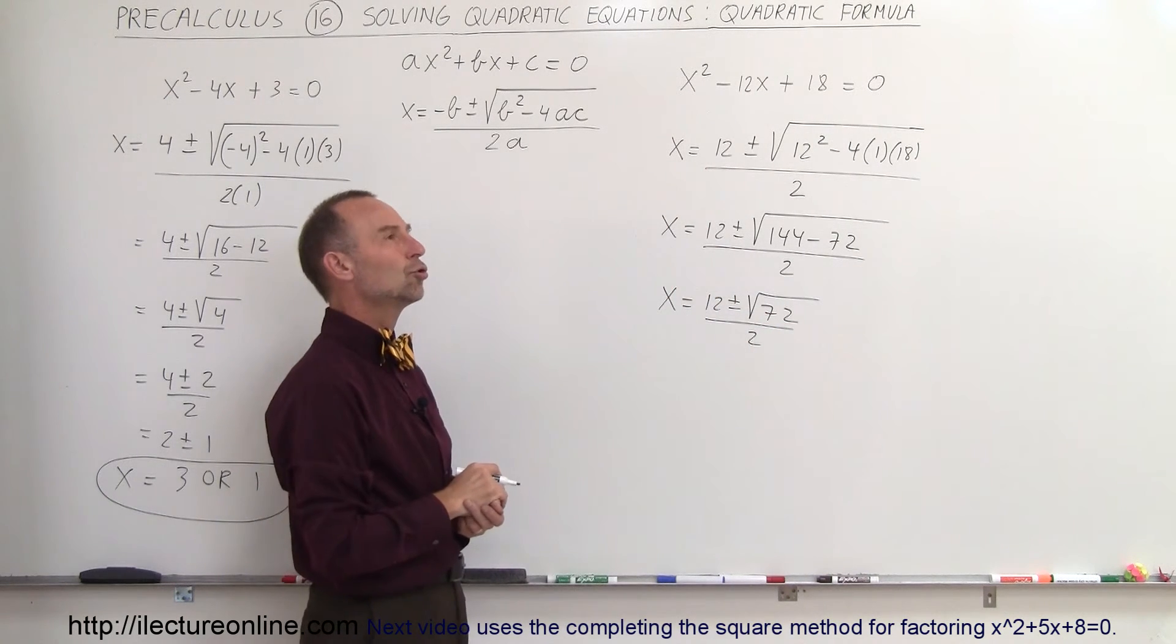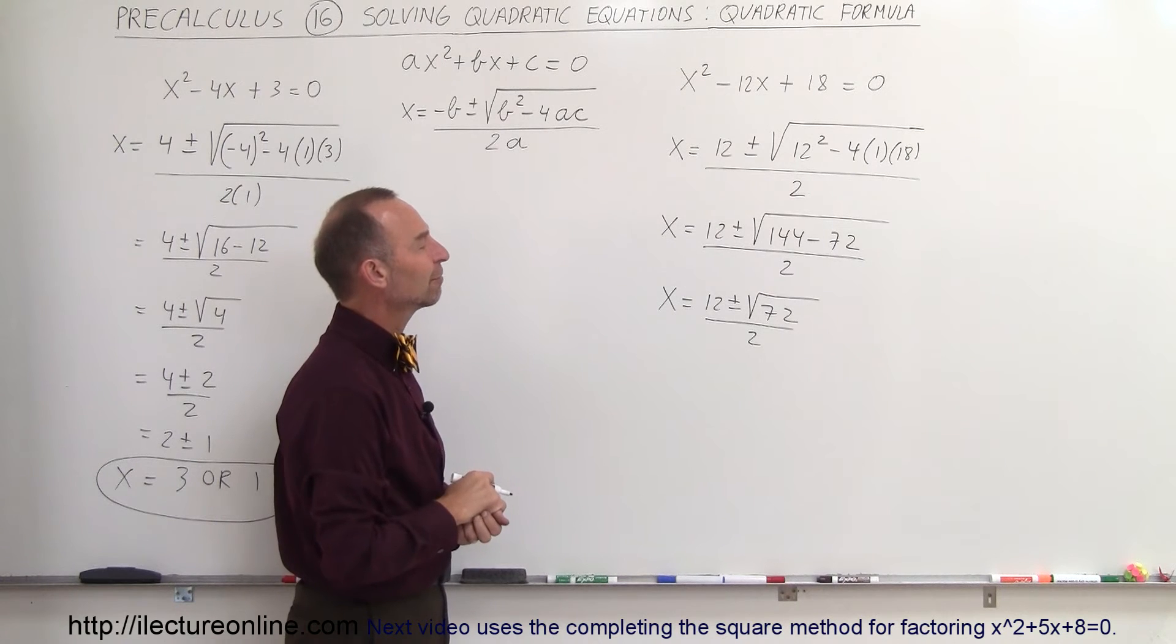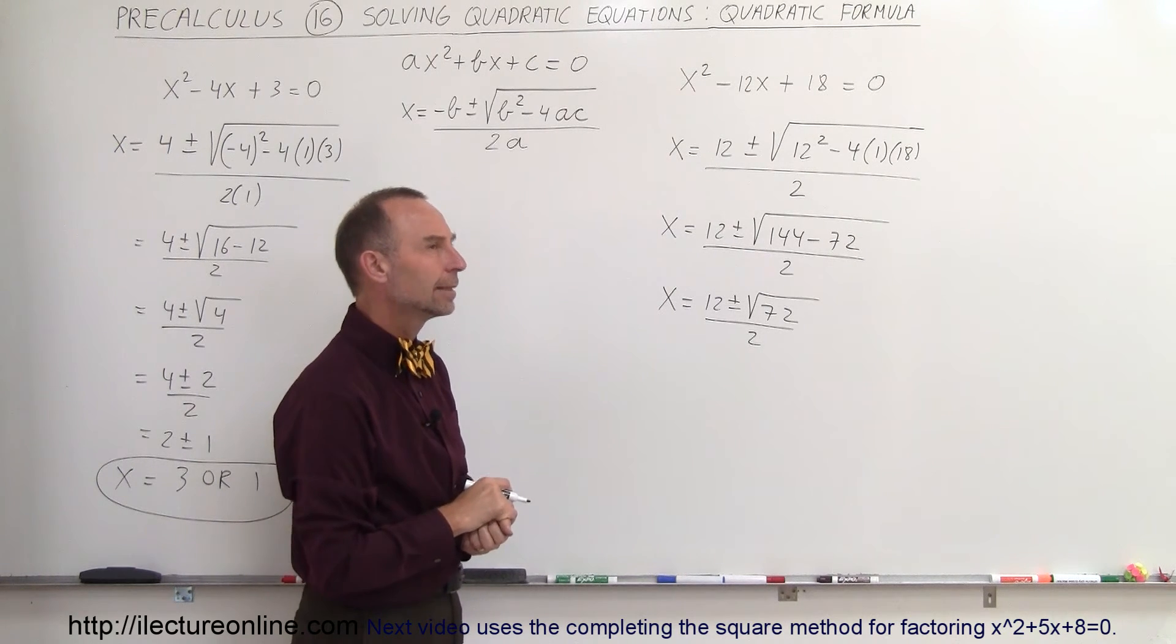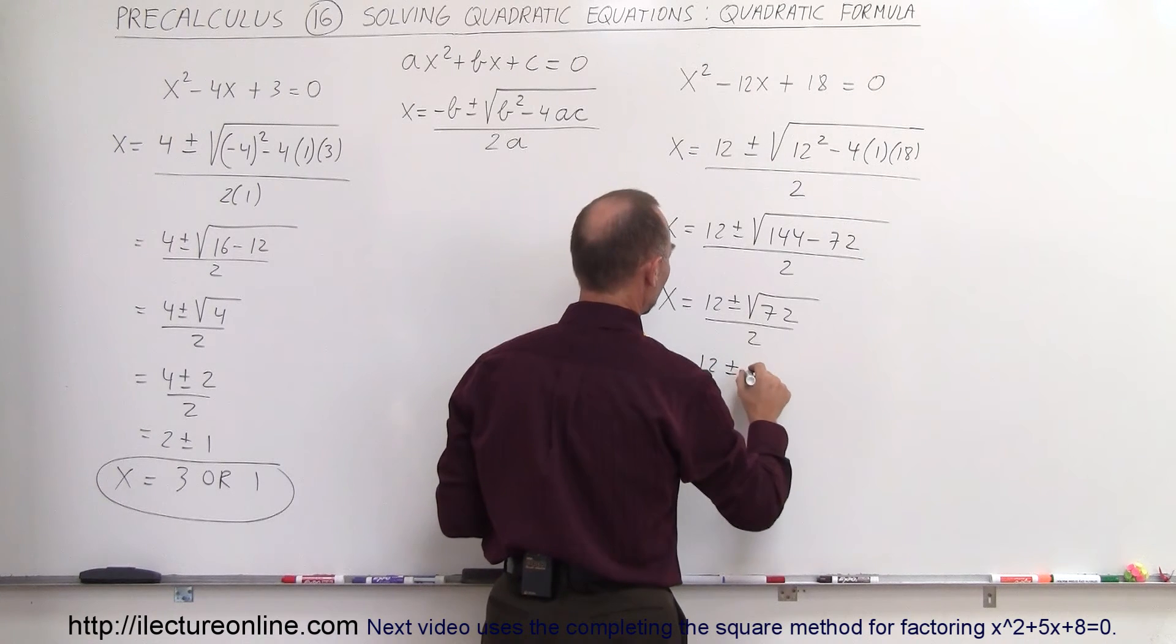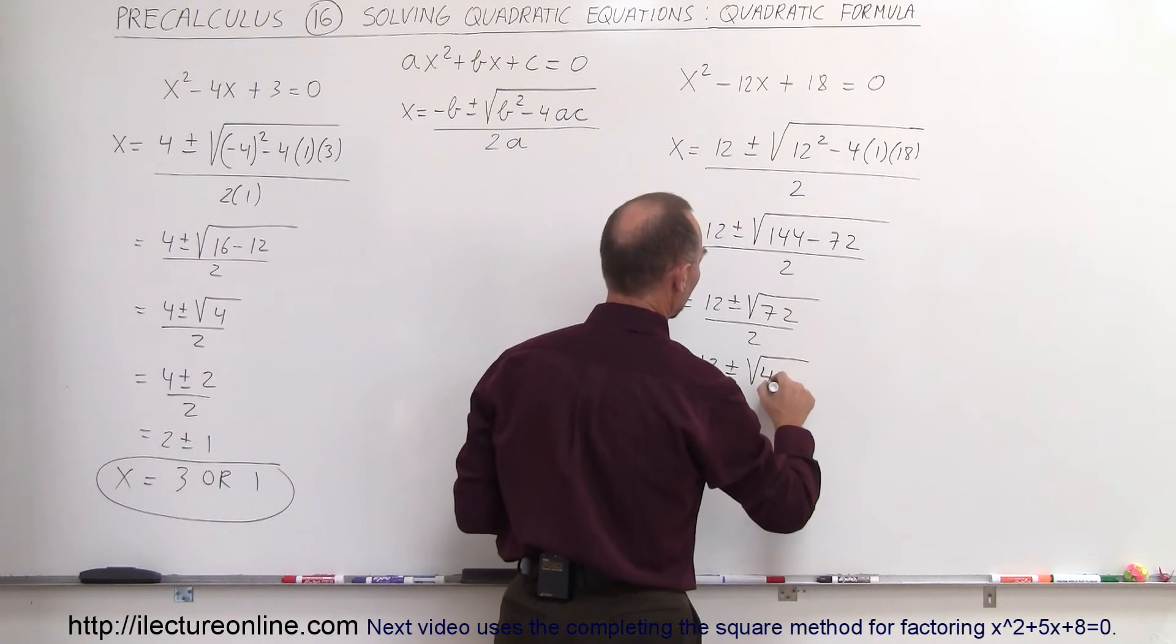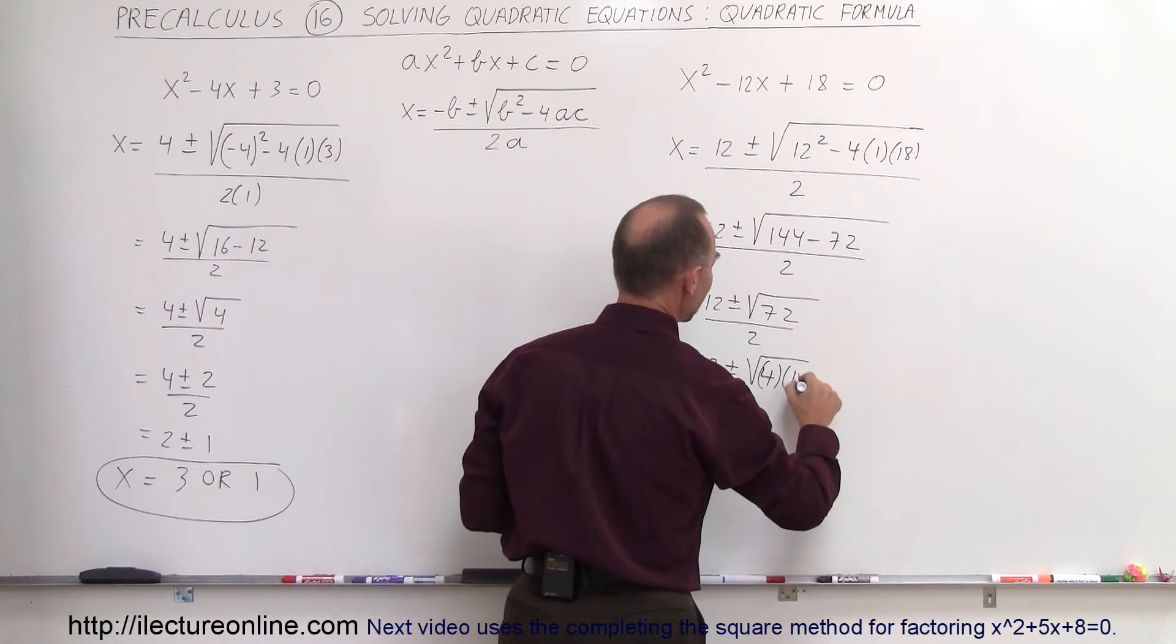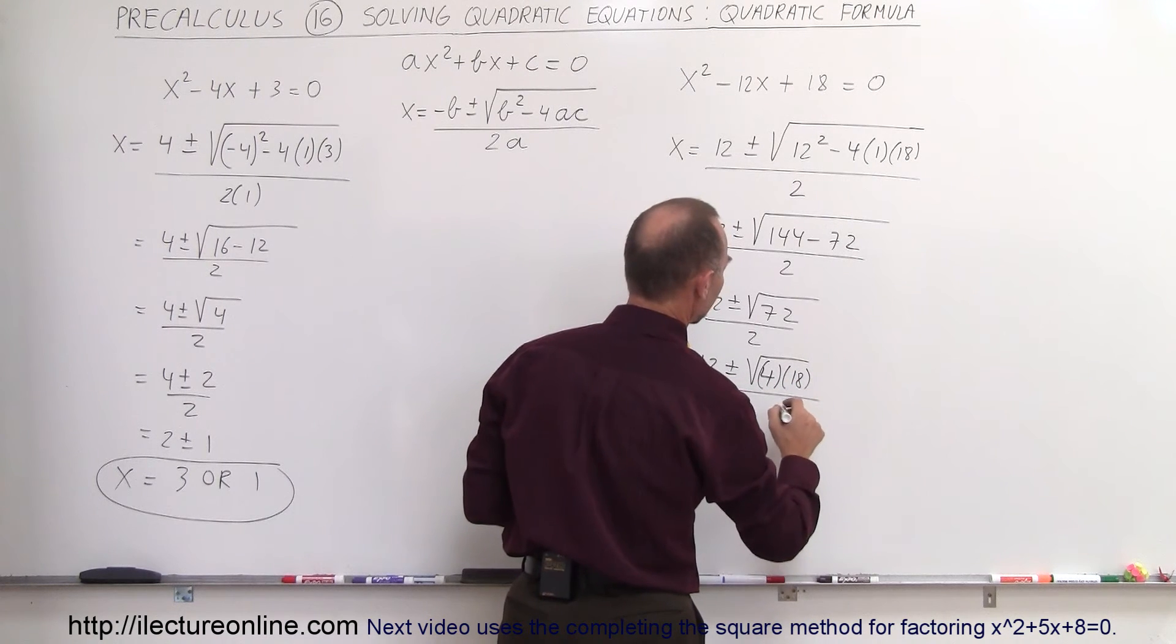So simplifying that more is x equals 12 plus or minus the square root of 72 divided by 2. Let's see here. 72, we can divide 72 by 4 to get 18. That's probably it.